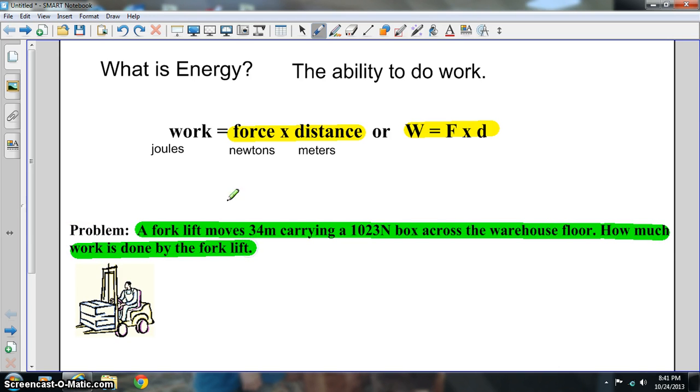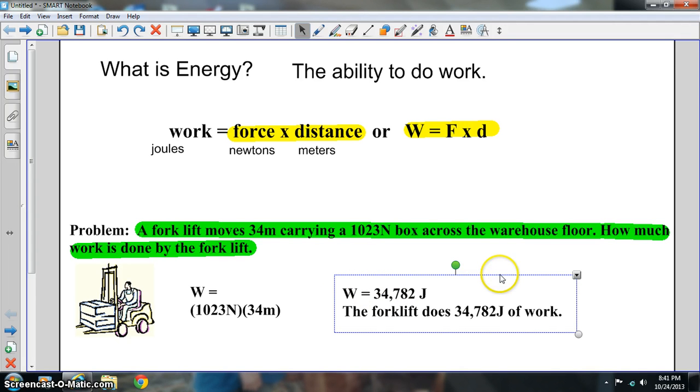So if we look, we have 1,023 newtons times 34, and then that's going to give us our amount of work that we've done. And the forklift does 34,782 joules of work.